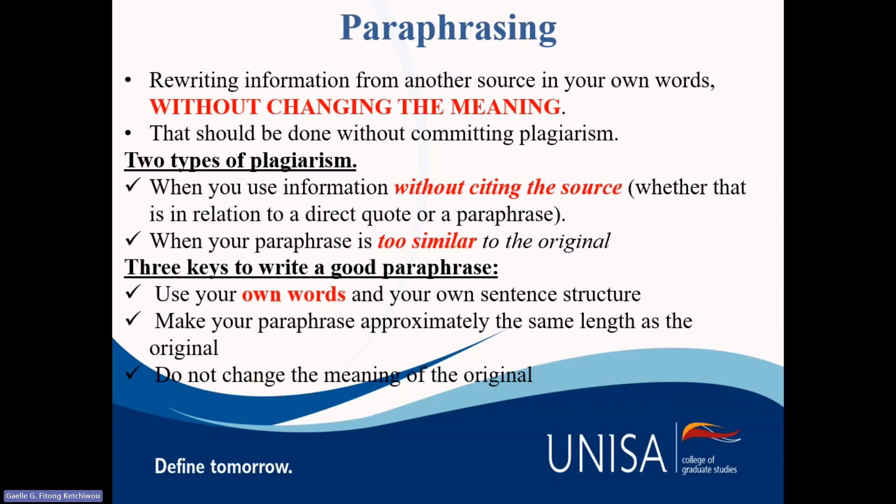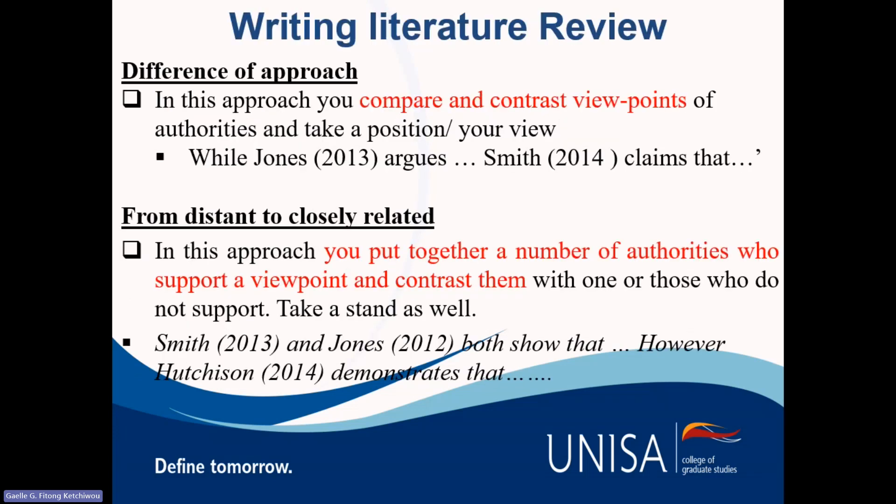There are two types of plagiarism. You can cite the author, or you can say what someone said without citing them — meaning you just copy and paste what they said without acknowledging them. You can also write a phrase that is too similar to what they wrote, too similar to the original. When paraphrasing, you need to be mindful of three things: use your own words, the meaning must not change, and the same meaning must be conveyed from what the primary author intended.